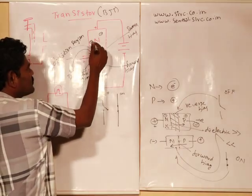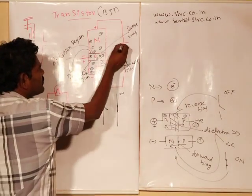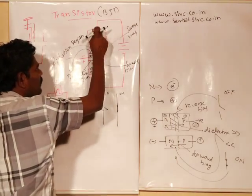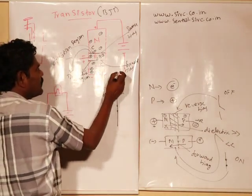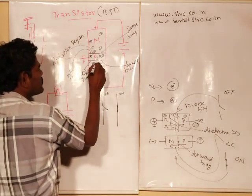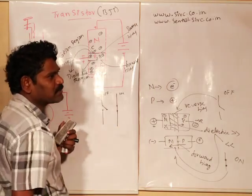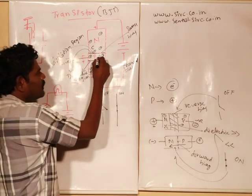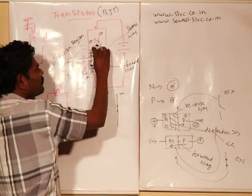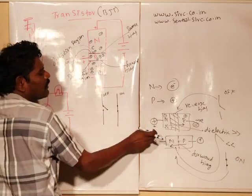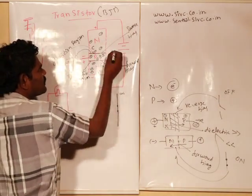In the case of a transistor, we have NPN material with two depletion regions, which we call dielectric regions. This is the collector, this is the base, and this is the emitter. When I am giving a small signal to the base — a positive signal in terms of milliamps — the first depletion region is reduced and becomes conducting. The second depletion region is enhanced because of the positive polarity at the collector. So the emitter-base junction is in forward bias and the base-collector junction is in reverse bias.